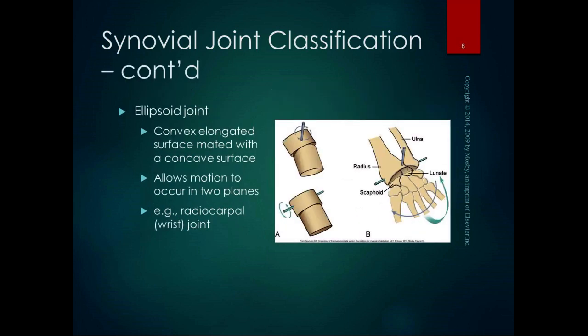An ellipsoid joint is a convex elongated surface mated with a concave surface. It allows motion in two planes, so it has two degrees of freedom, and that means we can do circumduction with it. The radiocarpal or wrist joint is the example for the ellipsoid joint — we can move in the sagittal plane and the frontal plane, giving us two degrees of freedom and the ability to circumduct, like cleaning out a peanut butter jar with your wrist.